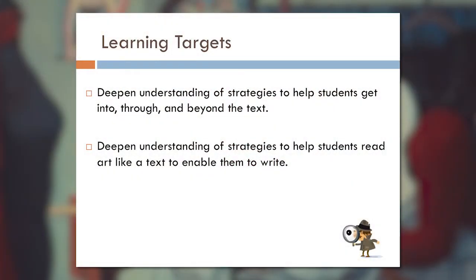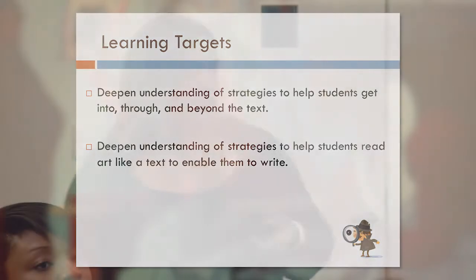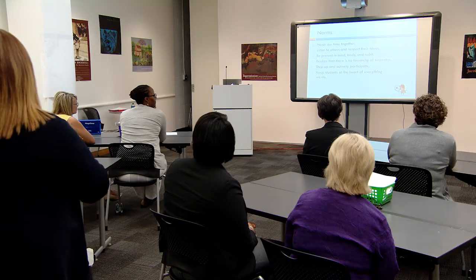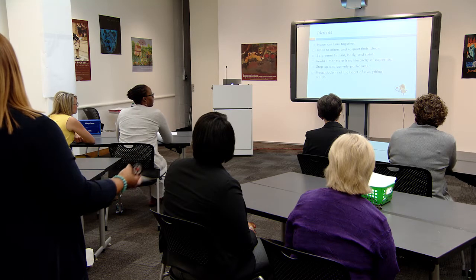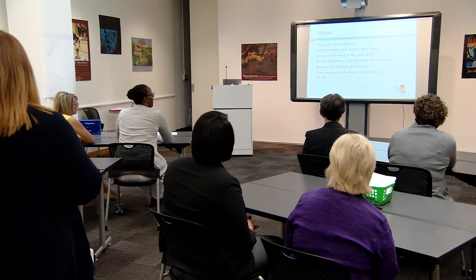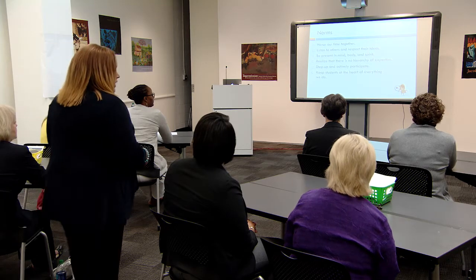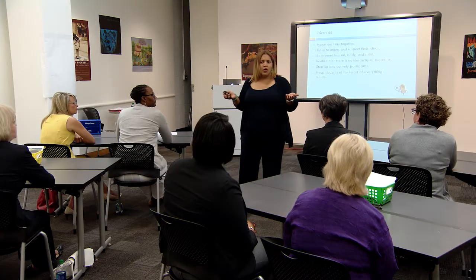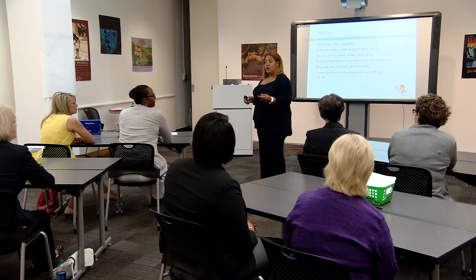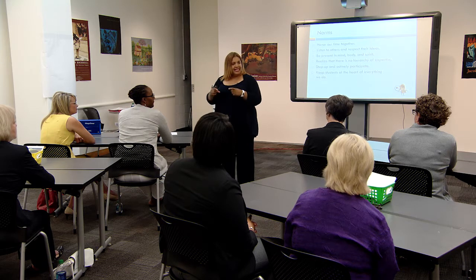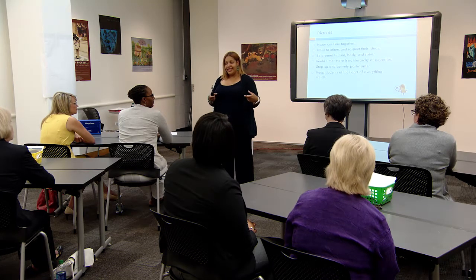Our goal for today is we'll leave with a strategy to help us to get into, go through, and beyond the text. We're going to deepen our understanding of how we're going to help students to read art like a text so that they can ultimately write and create some kind of product. If we don't do anything else today, keep students at the heart of everything we do — that helps us to stay on track with our planning. When we think about reading art like a text, that's linguistic literacy. But reading the art is visual literacy.